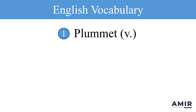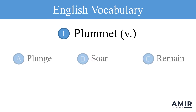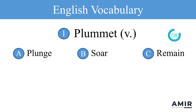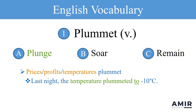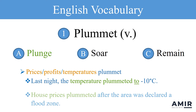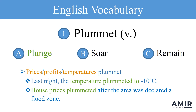Word number one: plummet. The correct answer is plunge. To plummet means to fall suddenly and quickly. It's often used to describe a sharp decrease in value, quantity, or level. Here are some common collocations with plummet. For example, you might say: last night the temperature plummeted to minus 10 degrees Celsius. House prices plummeted after the area was declared a flood zone.